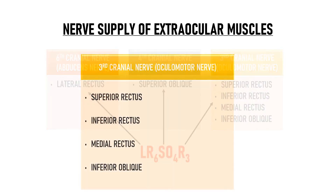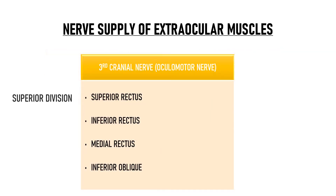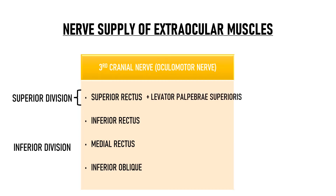The third cranial nerve has two divisions: superior and inferior. The superior division supplies the superior rectus and the levator palpebrae superioris. The inferior division supplies the other three muscles: medial rectus, inferior rectus and inferior oblique. The way to remember it is that the superior division supplies the 'superiors' — superior rectus and levator palpebrae superioris — and the rest are supplied by the inferior division.